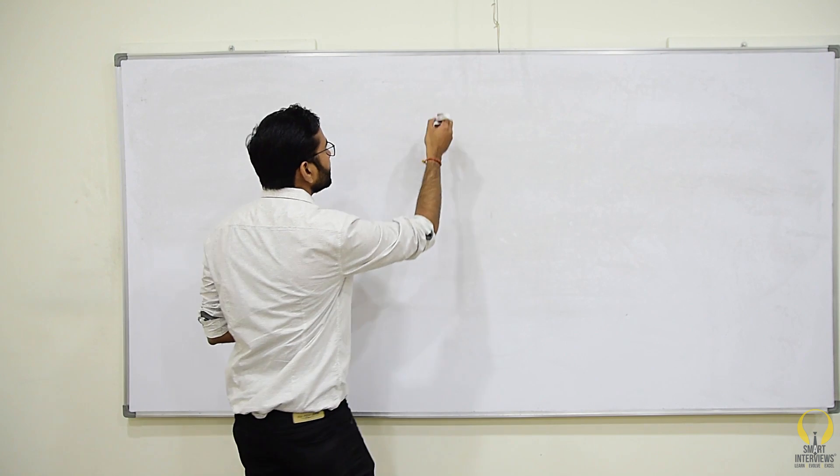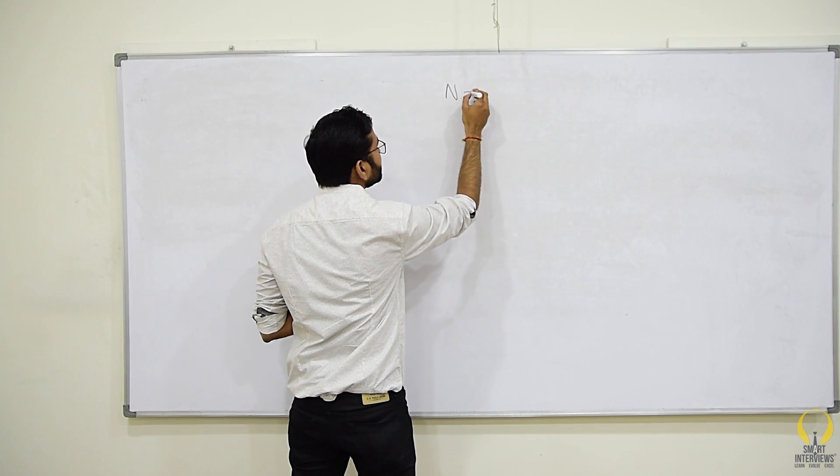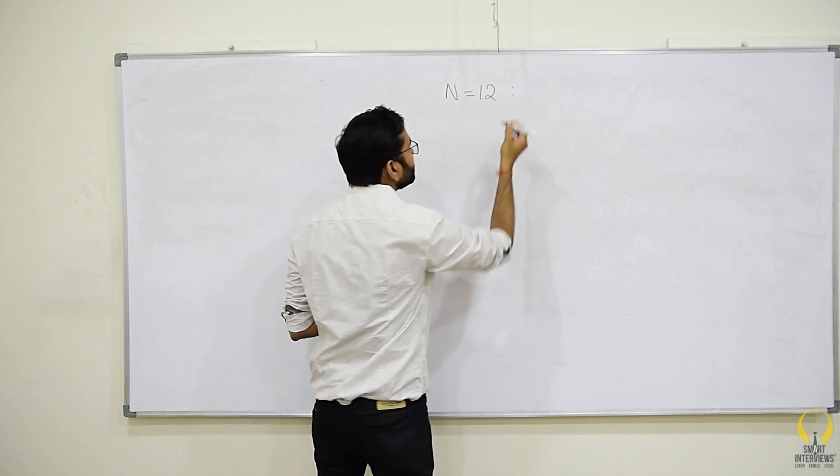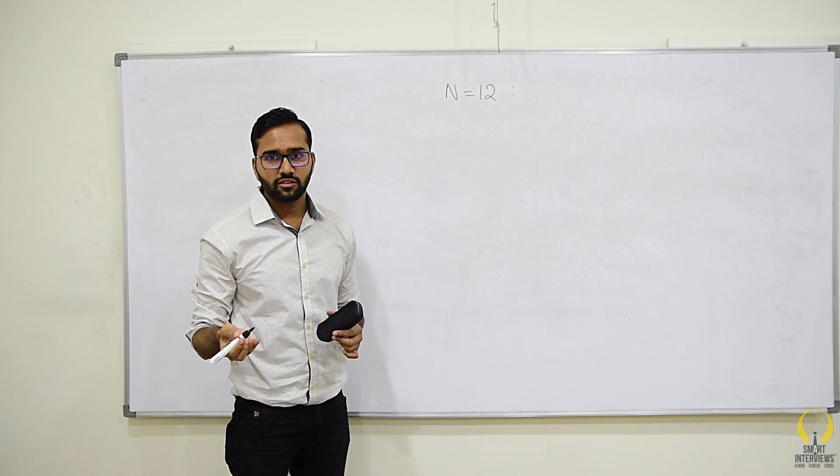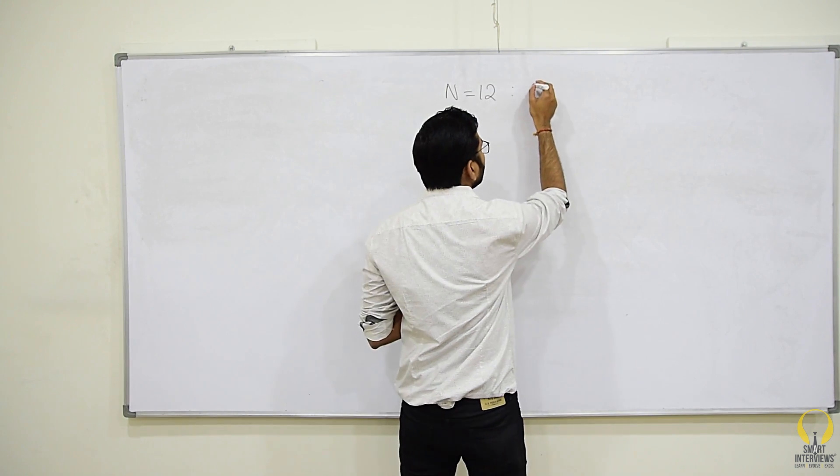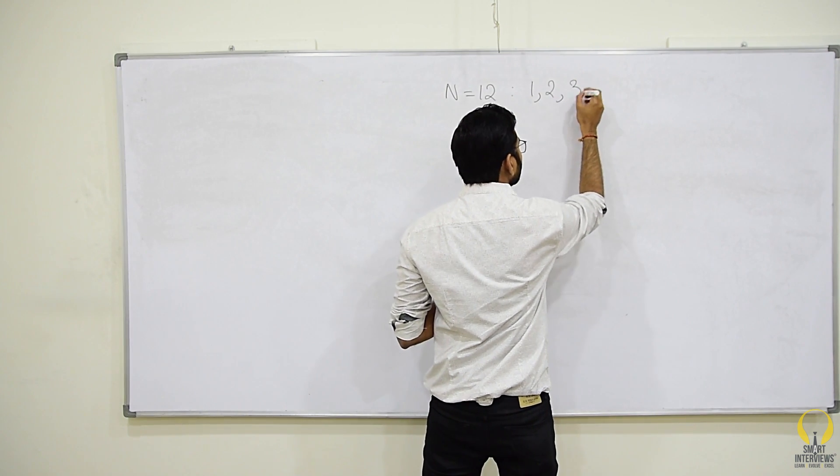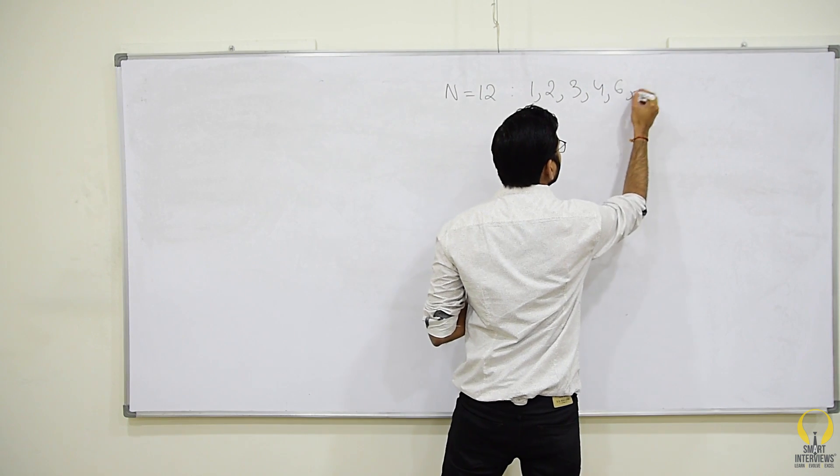Today's problem is given a number n, say n is 12, you have to simply find the divisors of 12. So, divisors of 12 are 1, 2, 3, 4, 6 and 12.